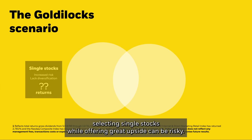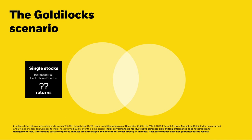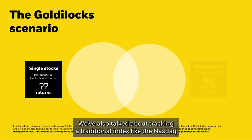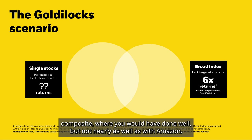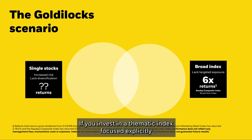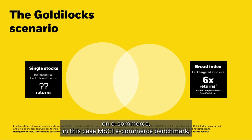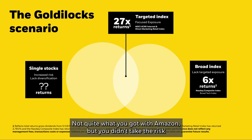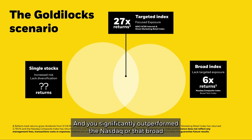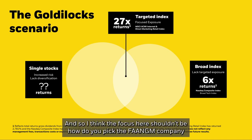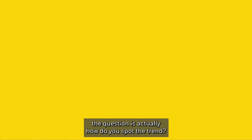We've talked about two approaches: selecting single stocks, which while offering great upside can be risky — great with Amazon, terrible with eToys — and tracking a traditional index like the NASDAQ, where you would have done well, but not nearly as well as with Amazon. The Goldilocks solution is a megatrend approach. Investing in a thematic index focused explicitly on e-commerce — in this case MSCI's e-commerce benchmark — would have delivered a 27x return, significantly outperforming the NASDAQ while avoiding the risk of picking an eToys. The focus shouldn't be how to pick the FAANGM company — the question is how do you spot the trend.